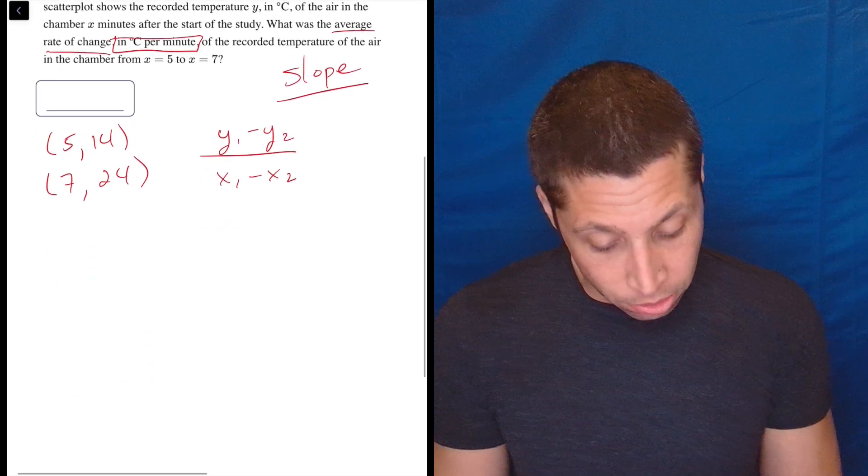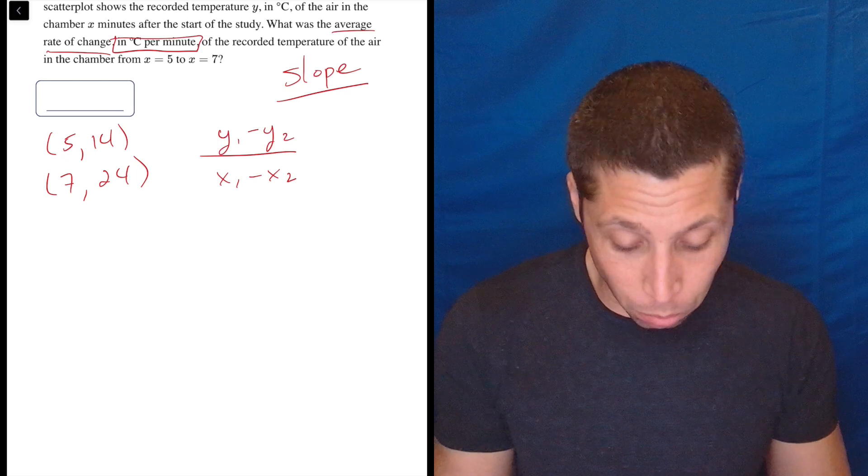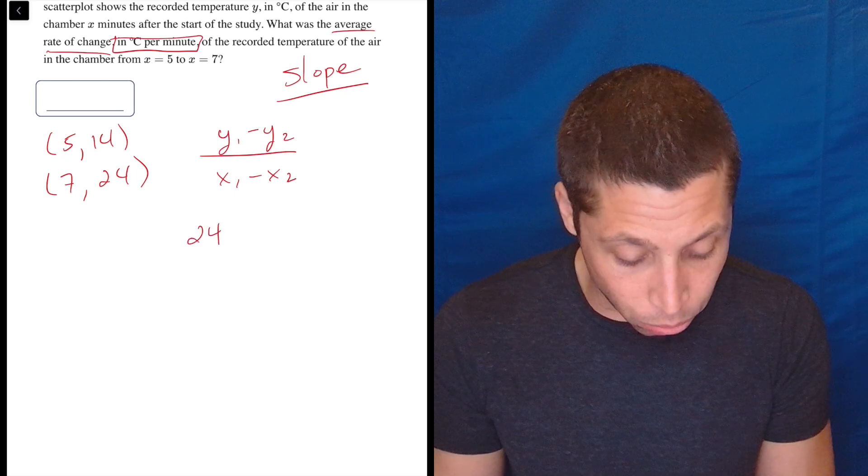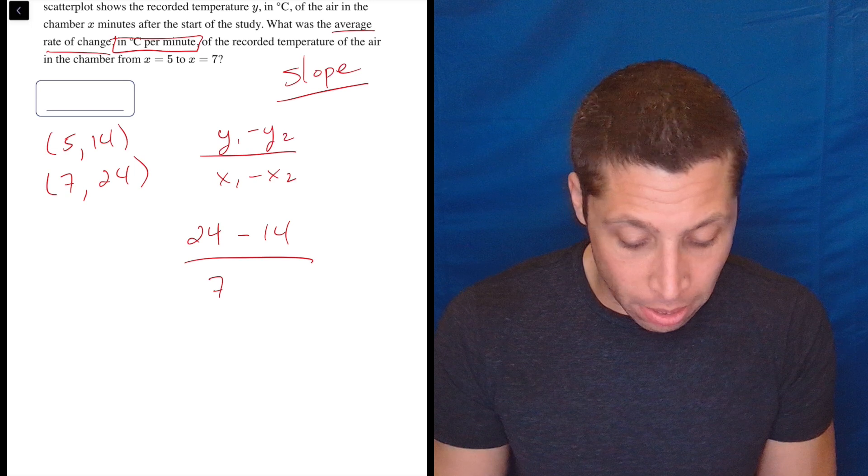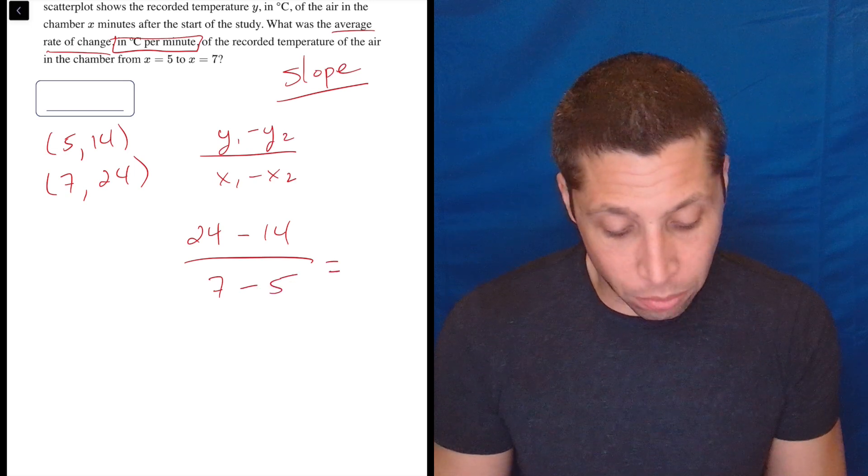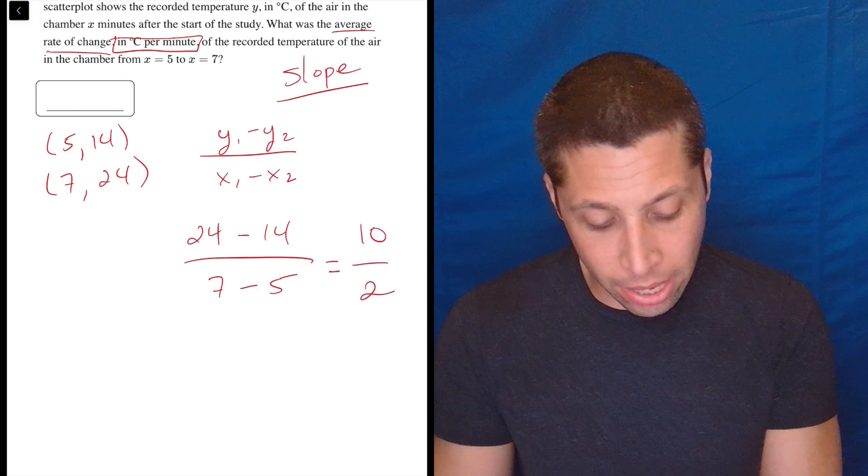So let's just do the formula. It doesn't really matter, but I'm going to try to avoid negatives. So 24 minus 14, both my y's, over 7 minus 5. So 24 minus 14 is 10. 7 minus 5 is 2. 10 divided by 2 is 5. Done.